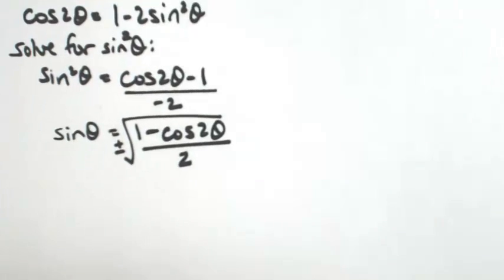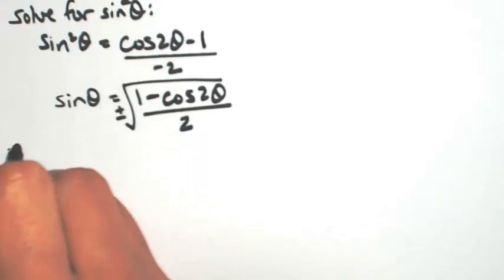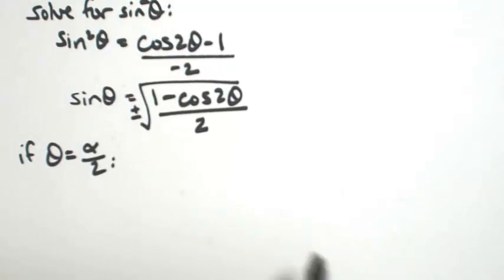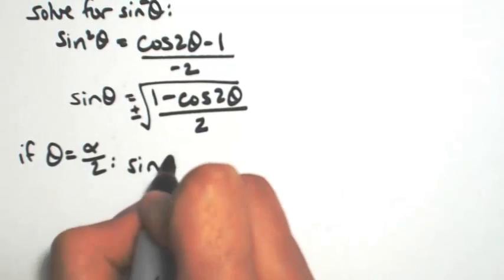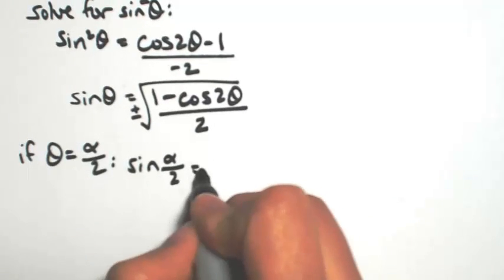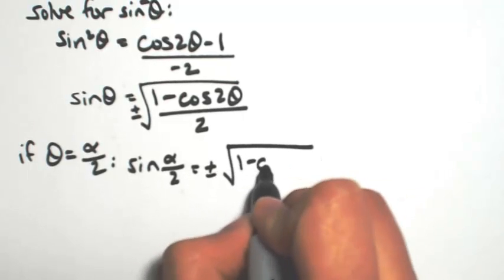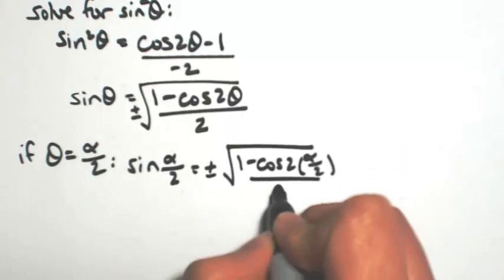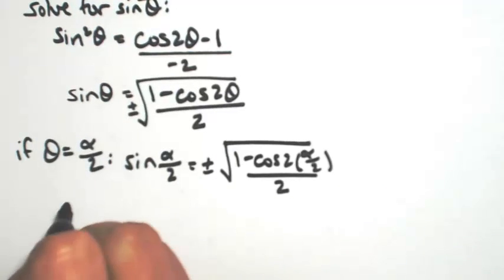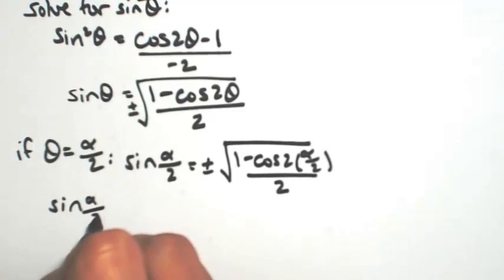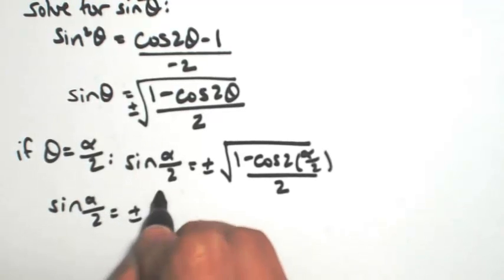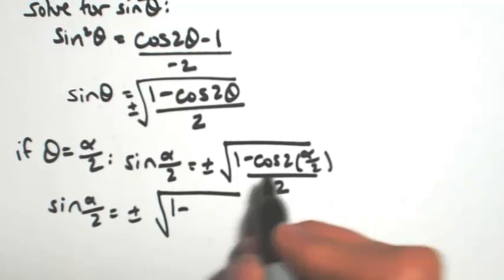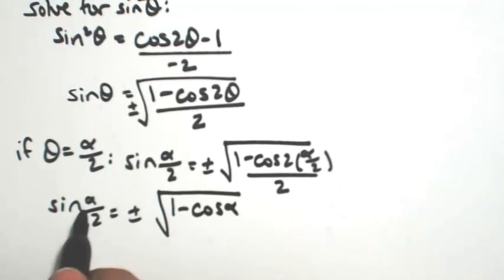Now I want to make this into a half-angle. So if theta is half of some other angle — let's say alpha over 2 — then we would have the sine of the half-angle alpha over 2 equaling plus or minus the square root of 1 minus the cosine of twice alpha over 2, all over 2. So the sine of alpha over 2 is plus or minus the square root of 1 minus cosine of alpha, divided by 2.